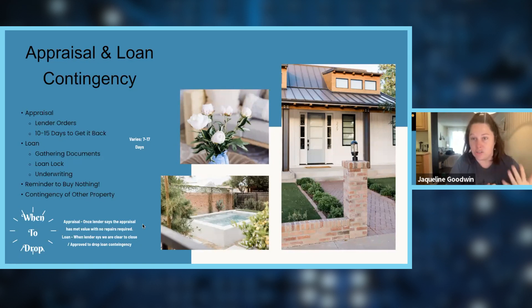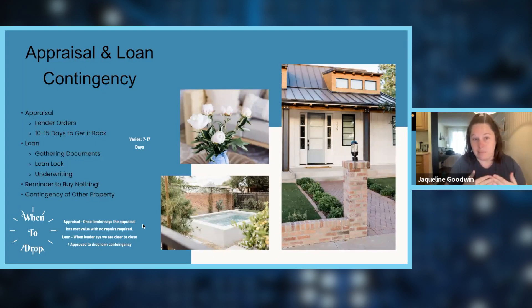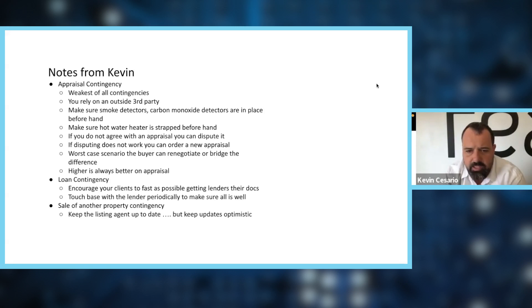Once all contingencies are dropped — appraisal, loan, physical, and other property if applicable — it's called a Full CR. Once signed and presented to the other side, the earnest money becomes hard. They will not get that money back. From this point forward, they're either closing on that house or losing their earnest money. It's not something to freak them out about — just let them know this is their final exit ramp. Be really confident they're ready.